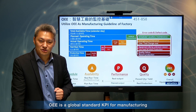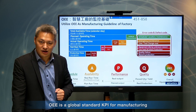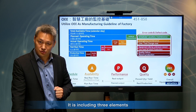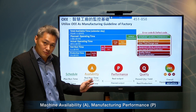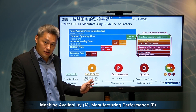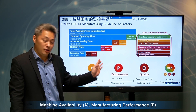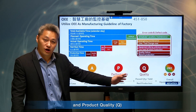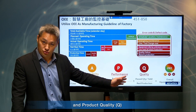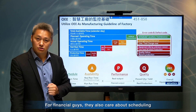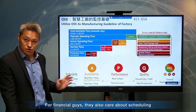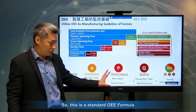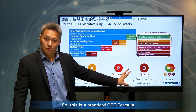OEE is a global standard KPI for manufacturing. It includes three elements: machine availability (A), manufacturing performance (P), and product quality (Q). For financial teams, it also accounts for scheduling. This is the standard OEE formula.